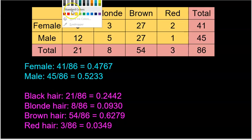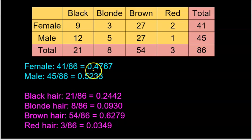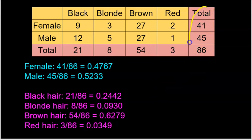For gender, 41 are female — that's the count, the frequency — but I want to know what proportion that is, so I take 41 divided by 86 and get 0.4767. For males, that's 45 divided by 86, which is 0.5233. We call these marginal distributions because these numbers are in the margins — the sides, top, and bottom of the table.